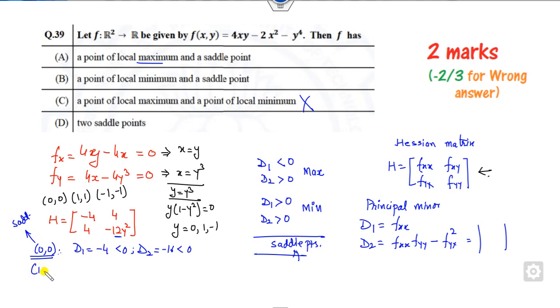Now corresponding to the point (1,1), the first principal minor is minus 4 which is less than 0. The second principal minor when it's 1, it's minus 12. The determinant is plus 48 minus 16, which is plus 32, greater than 0. So D1 is less than 0, D2 is greater than 0. This is the case we call maximum. So this point is my maximum.